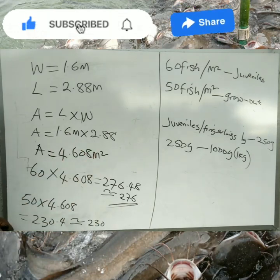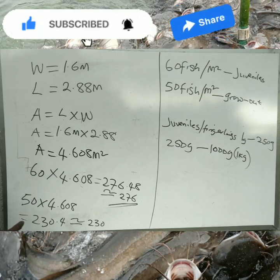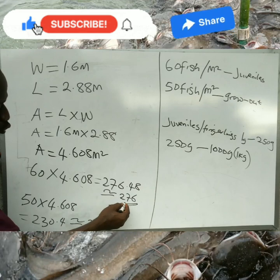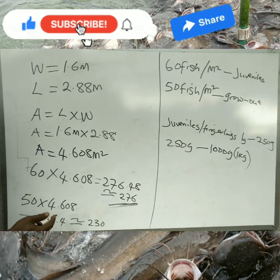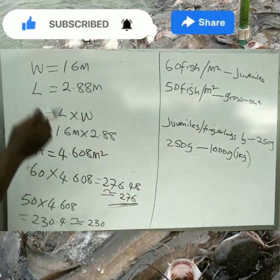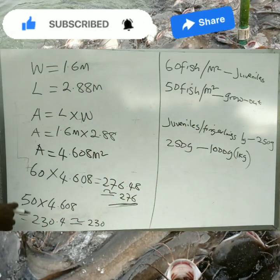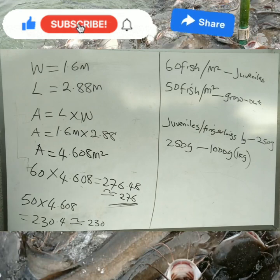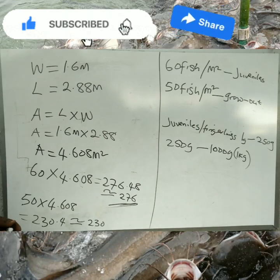You can see that the number for grow-out has reduced. This is because as the fish grow, they occupy more space in the pond. So if you kept the same 276 fish and allowed them to grow from 250 grams to 1 kg in this pond, you would already be overstocking — the pond would be exceeding its carrying capacity.